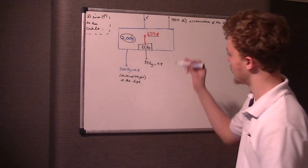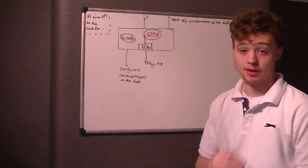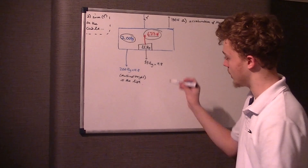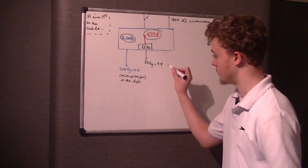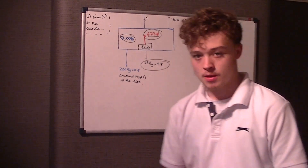The reaction force upward is 473 newtons as we're told, and the force down, which we know, is w = mg — 55 times 9.8.